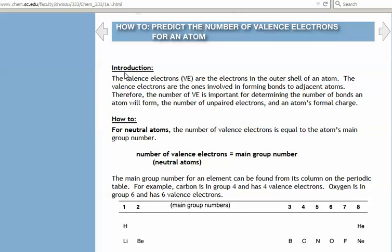You can see from reading the introduction that the valence electrons are the electrons in the outer shell of an atom. A way to think about the structure of an atom is basically a solar system model where you have the nucleus in the center, and then in orbit surrounding the nucleus you have electrons.